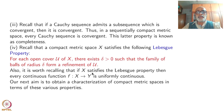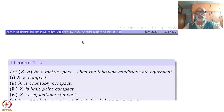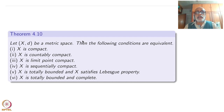Our next aim is to obtain a characterization of compact metric spaces in terms of these properties: Lebesgue property, sequential compactness, total boundedness, and so on. There are 6 equivalent conditions for a compact metric space. The following conditions are equivalent: (1) X is compact, (2) X is countably compact, (3) X is limit point compact, (4) X is sequentially compact, (5) X is totally bounded and has the Lebesgue property, (6) X is totally bounded and complete.